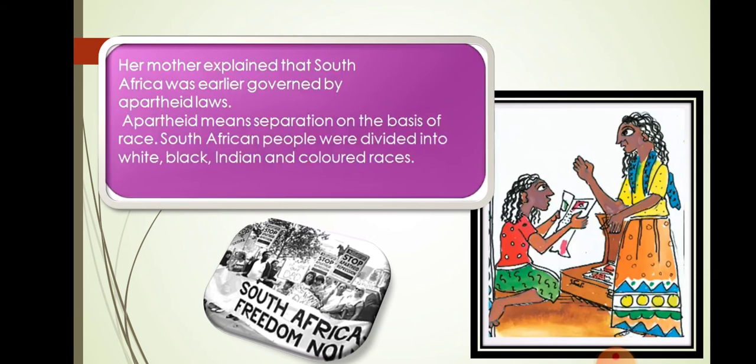Maya Naidu, an 11-year-old South African girl living in the town of Johannesburg, was helping her mother clear up her old boxes. She found a scrapbook full of pictures and newspaper articles. There were many pictures of a young school boy of around 15 years of age. When she asked her mother who the boy was, she was told that he was called Hector Peterson. He had been shot by the police. Maya was shocked and asked why. Her mother explained that South Africa was earlier governed by Apartheid laws.